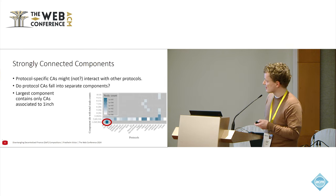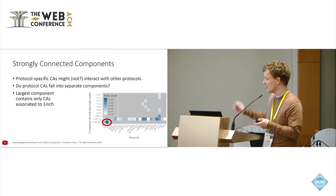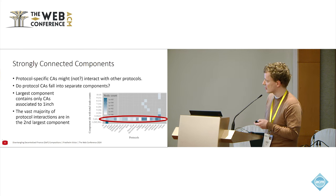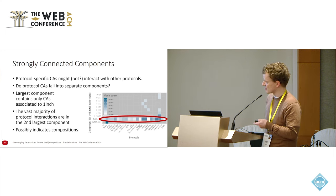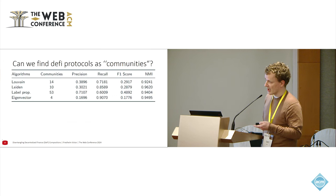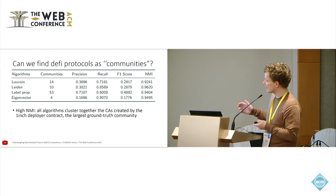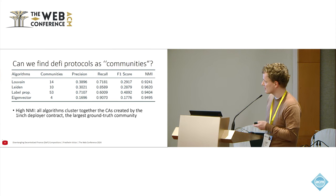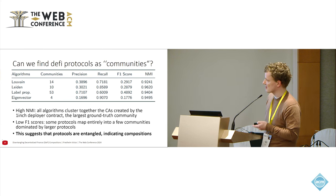It looks like, for one instance, 1inch seems to be mostly — but not entirely — in a single strongly connected component. But the majority of other DeFi protocols seem to be intertwined and entangled, suggesting compositions are happening. We also applied community detection algorithms, which give a similar picture. While there is a high normalized mutual information in the contract account networks, the low F1 score across different community detection algorithms also suggests these protocols are intertwined, indicating compositions.